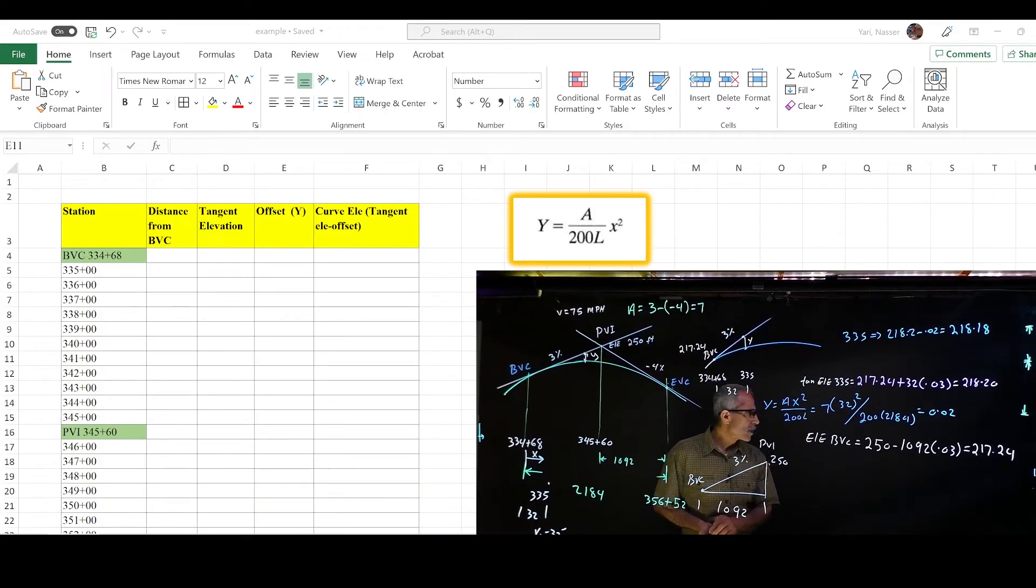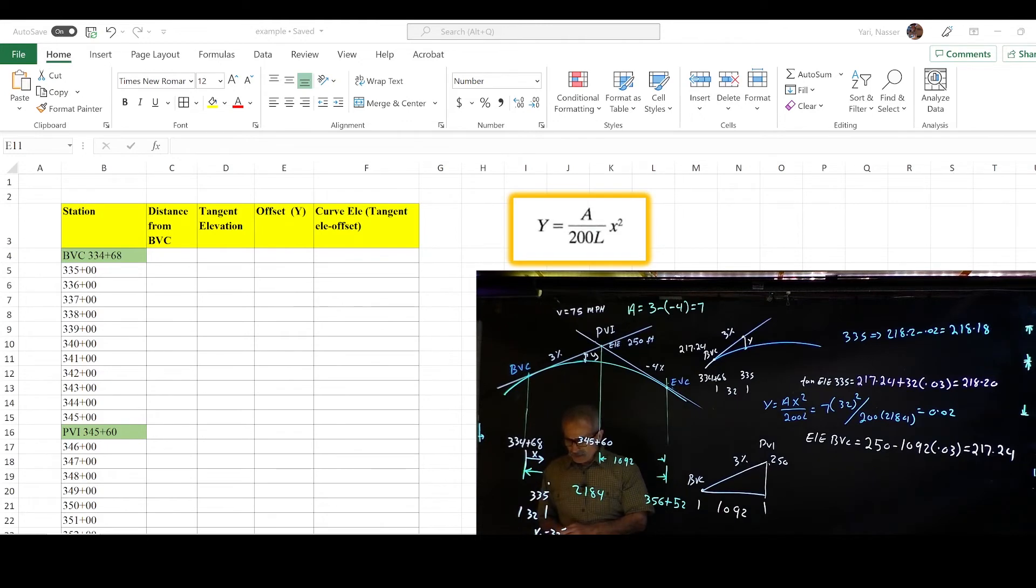And we're going to come up here, and the distance of the first station to BVC is obviously 0, because that's where the BVC is right here. Then the tangent elevation in there was calculated to be 217.24.